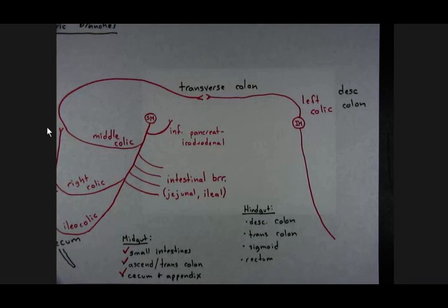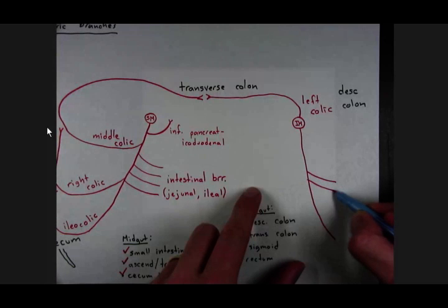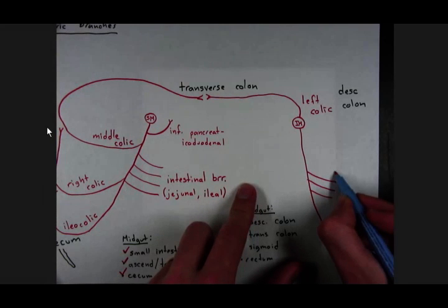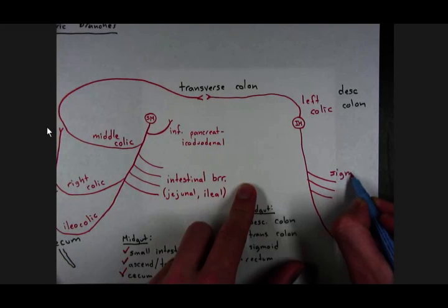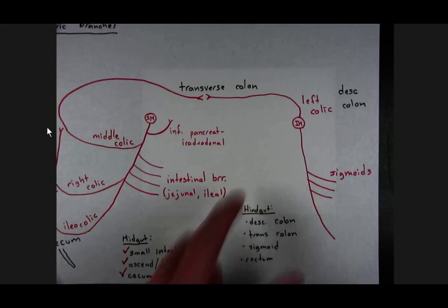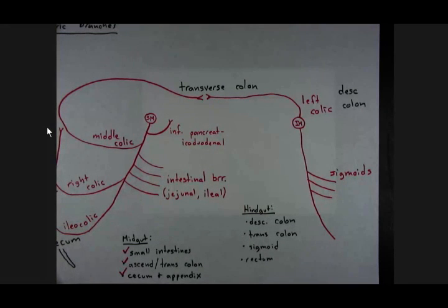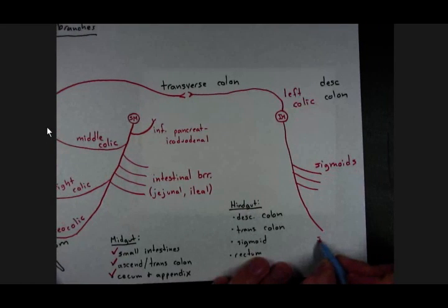There are several sigmoid arteries off of the inferior mesenteric. And the inferior mesenteric artery terminates as the superior rectal artery.